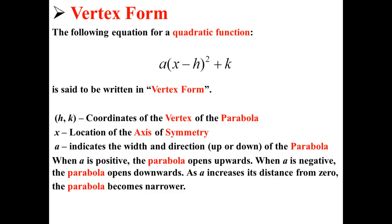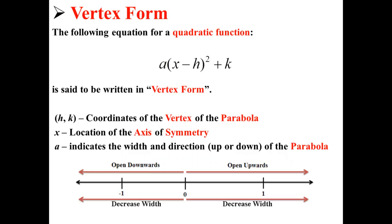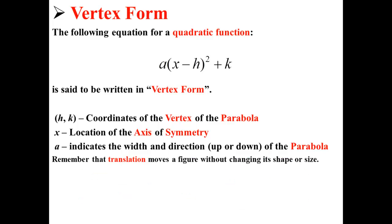As a increases its distance from zero, the parabola becomes narrower. For example, here you can see that when a is positive it opens upwards and when a is negative it opens downwards. As you get further away from zero it decreases in width, while as you get closer to zero it increases in width.